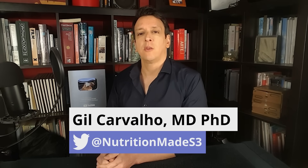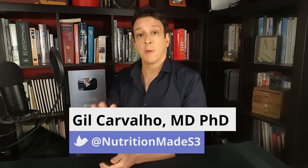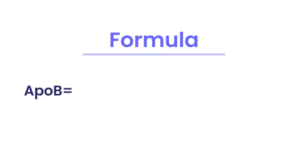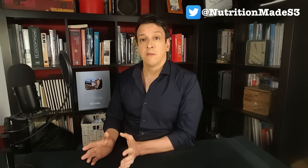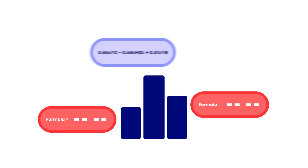There is a formula that you can use to estimate your ApoB using the lipid panel you already have — no more needles and no more money spent. The formula is: 0.65 times your total cholesterol, minus 0.59 times your HDL cholesterol, plus 0.01 times your triglycerides. A study looked at many different formulas to try to estimate ApoB, and this one beat most of the others, giving you the closest estimation of your ApoB reading.